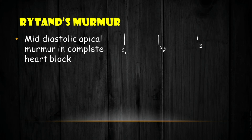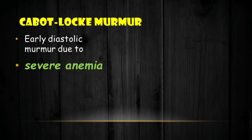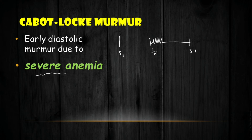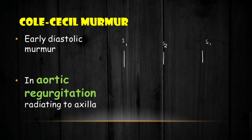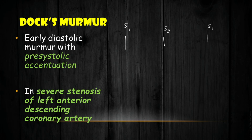Rytand's murmur is a mid-diastolic apical murmur heard in complete heart block. Cabot-Locke murmur is an early diastolic murmur heard during severe anemic conditions. Cole-Cecil murmur is also an early diastolic murmur heard mainly in aortic regurgitation, radiating to the axilla.